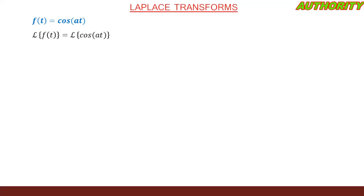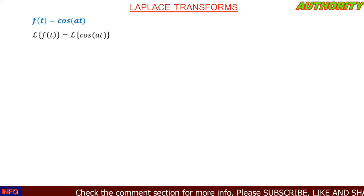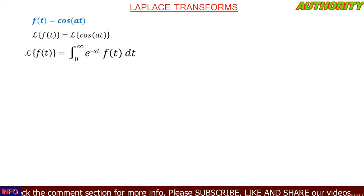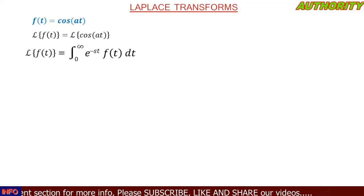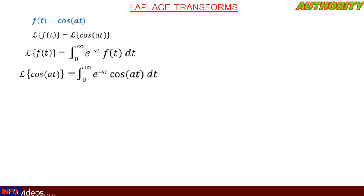Number five: we have f of t equal to cos(at). We are asked to find the Laplace of this, so the Laplace of f of t is equal to the Laplace of cos(at). Going with the definition of the Laplace transform, the Laplace transform of f of t is equal to the integral from zero to infinity of e raised to the power of minus st times f of t dt. Here our f of t is cos(at), so we replace f of t with cos(at), giving us the integral from zero to infinity of e^(−st) cos(at) dt.